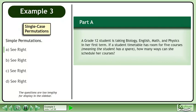In this example, we will solve simple permutations. In Part A, a Grade 12 student is taking Biology, English, Math, and Physics in her first term. If a student timetable has room for 5 courses, meaning the student has a spare, how many ways can she schedule her courses?